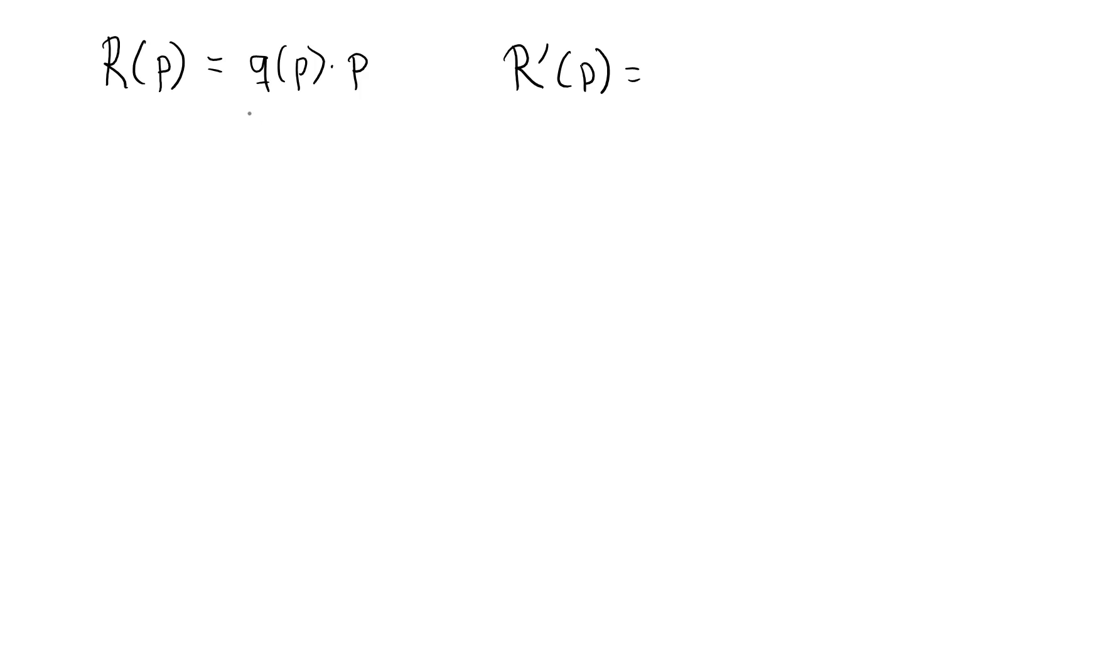To find this derivative we need to differentiate this product. To do that we use the product rule for derivatives. We have two terms: this is my first term and this is my second.